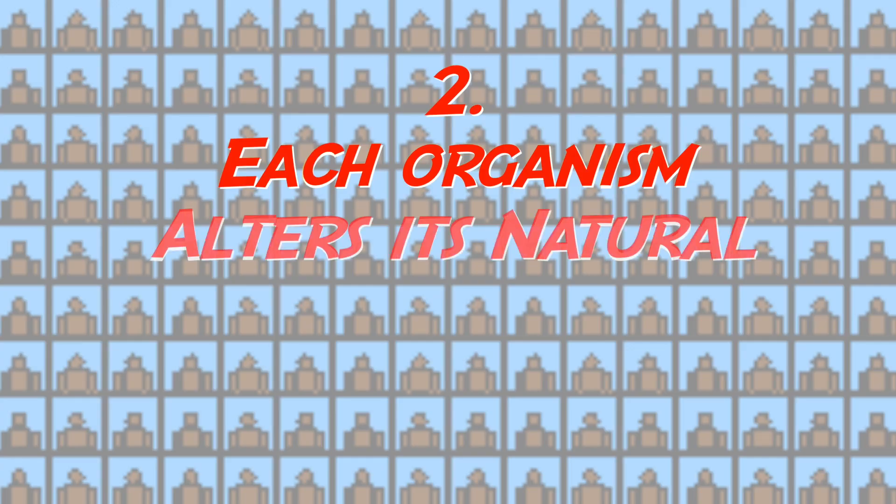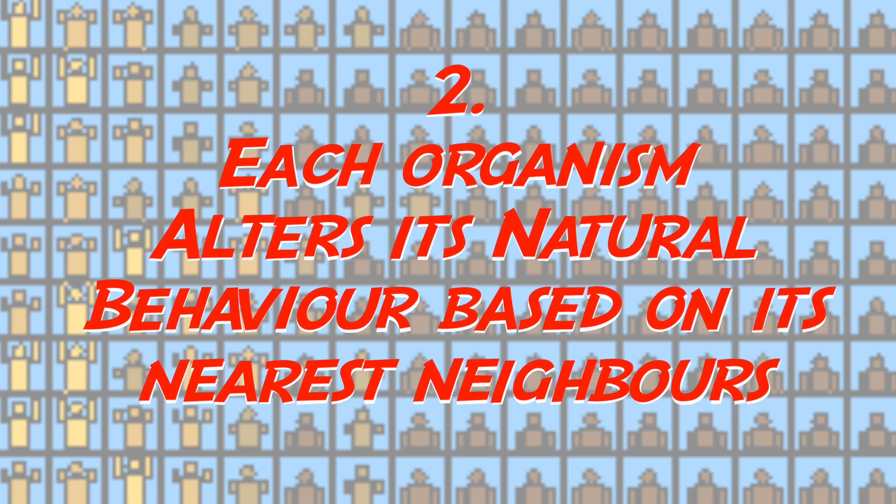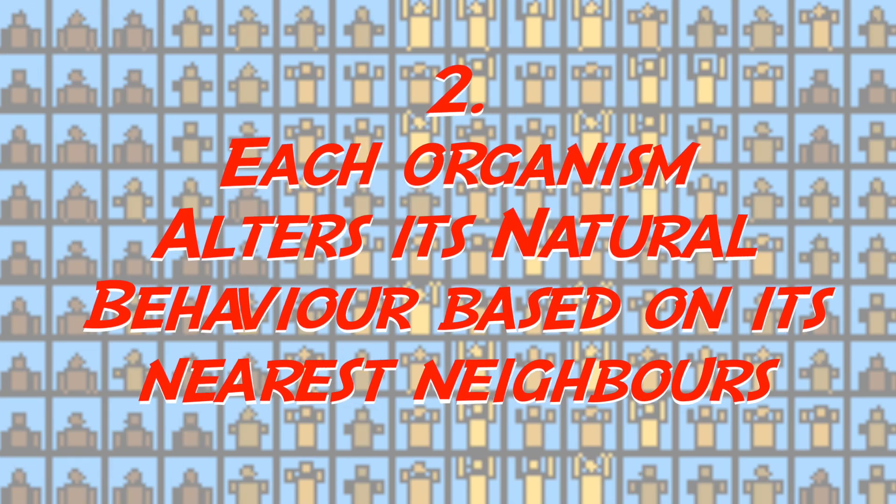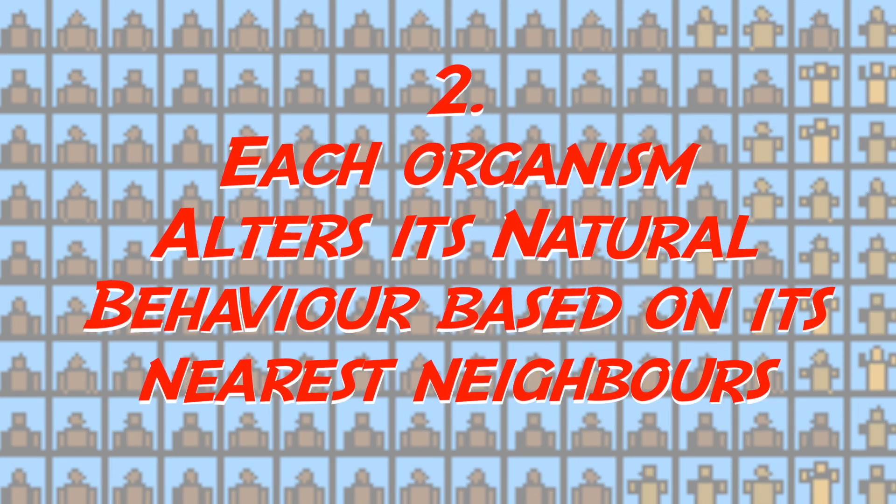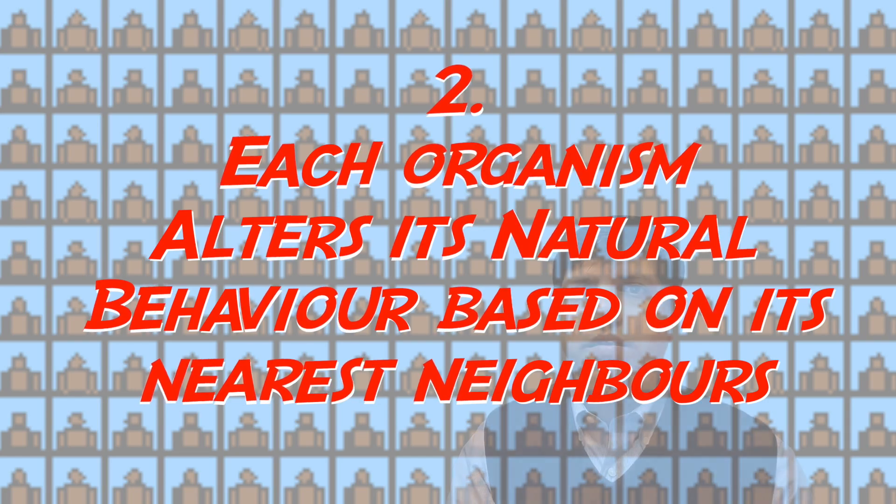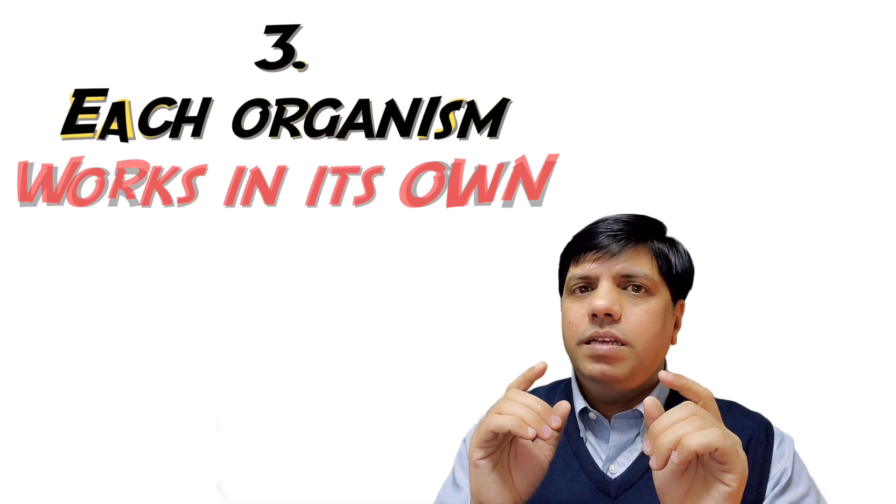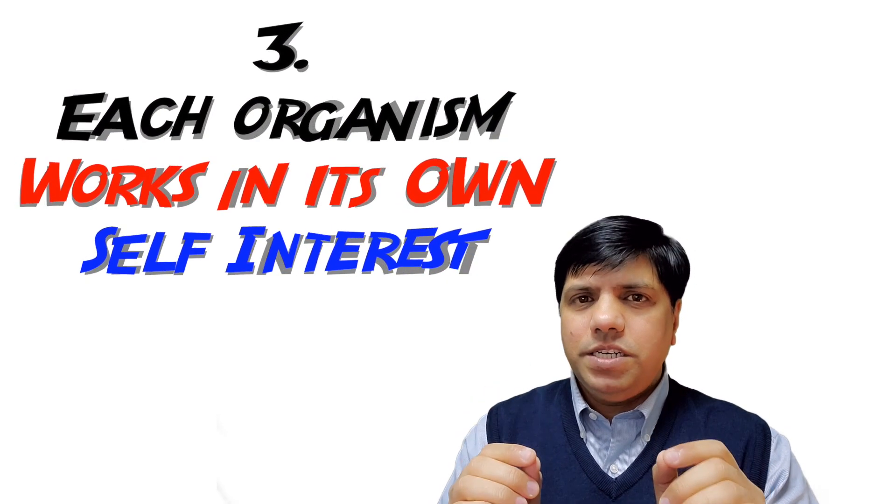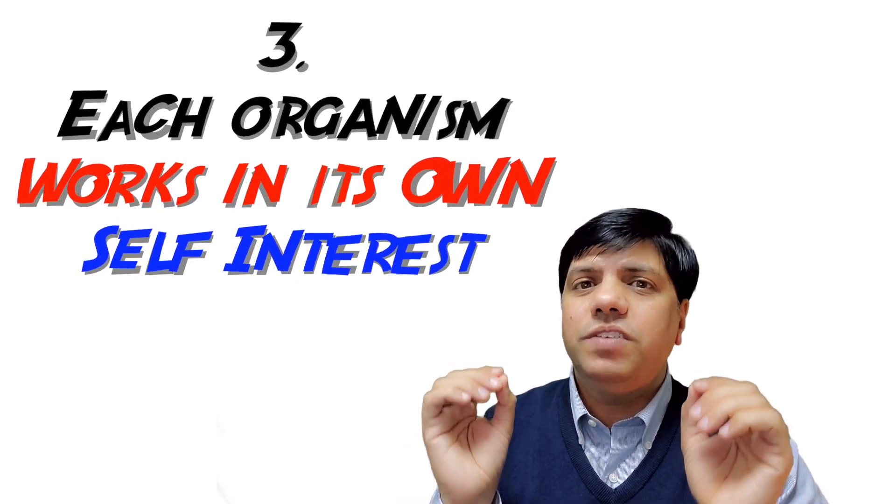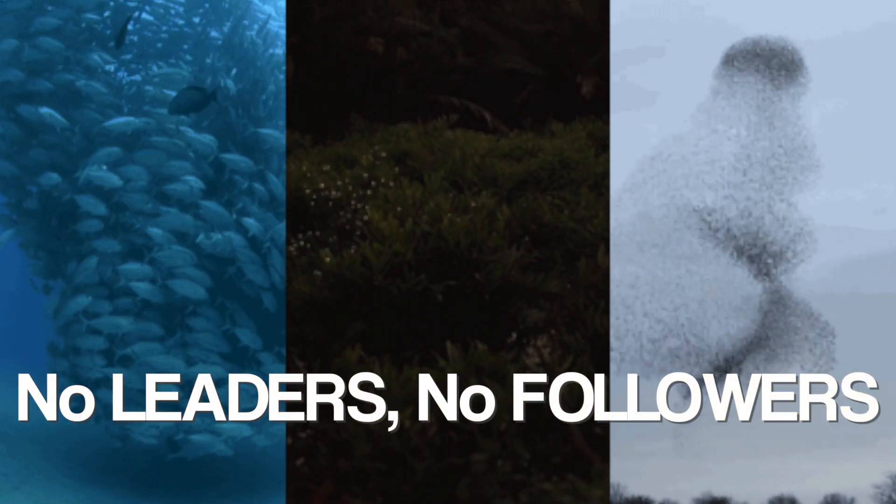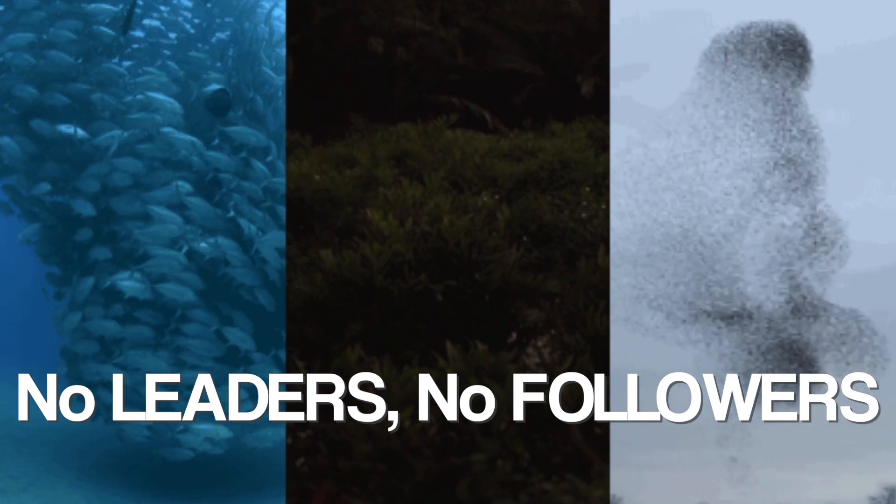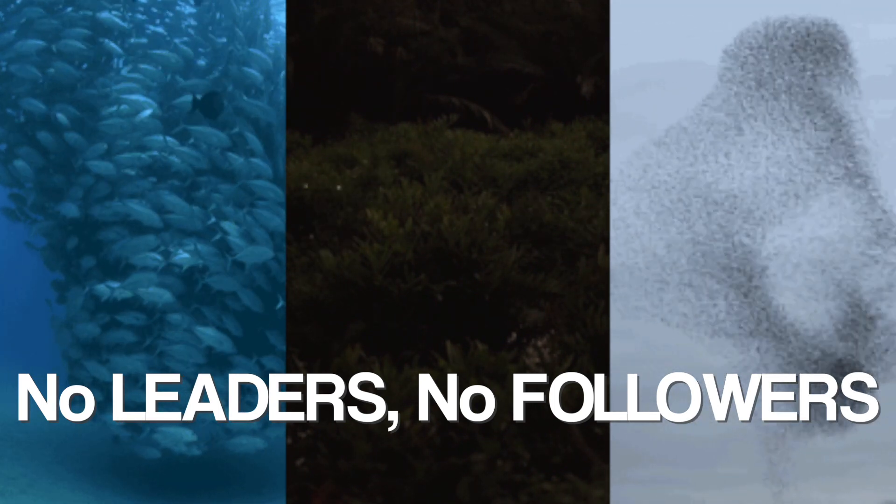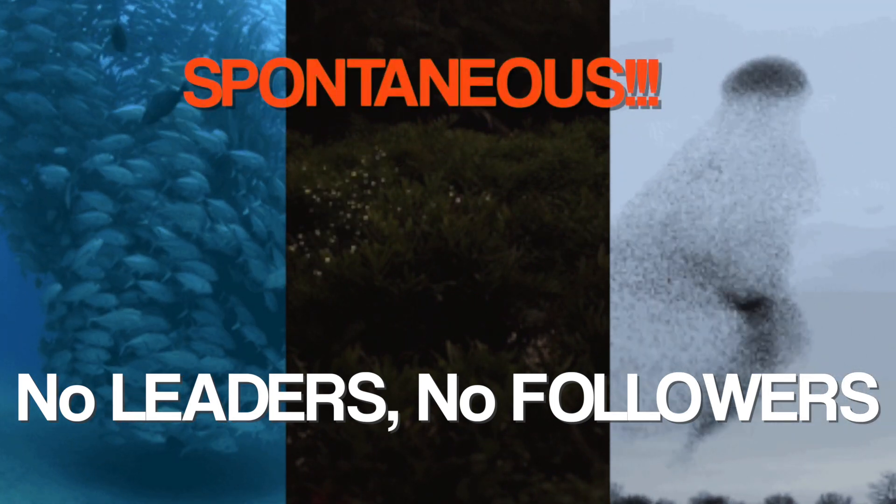Rule number two: each organism corrects or alters its own natural behavior based on the feedback that it gets from its nearest neighbors. Rule number three: each organism works in its own self-interest. There's no leader-follower relationship going on here. It's all happening spontaneously.